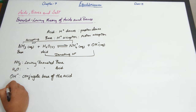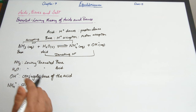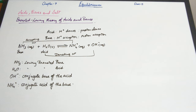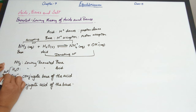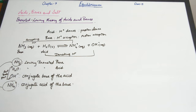NH4⁺ is the conjugate acid of the base: it likes to donate the proton, and proton donors are acids, so it's a conjugate acid of the base. These sets form acid-base pairs — an acid-base pair varies by just one proton. So H2O and OH⁻ are an acid-base pair, and NH3 and NH4⁺ are also an acid-base pair.